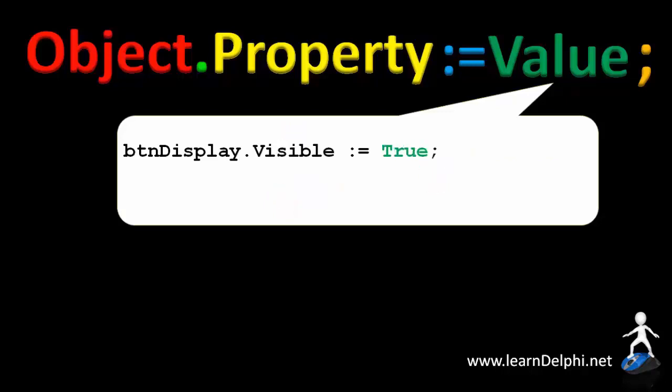Another property that we set often is the visible property. Visible can only be set to true or false. This setting will make the button visible or invisible to the user. We refer to these types of values as boolean values. This statement makes the visible property of the button true, and this statement makes the button invisible to the user.